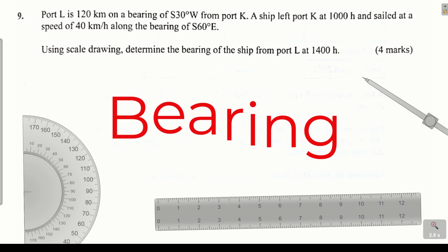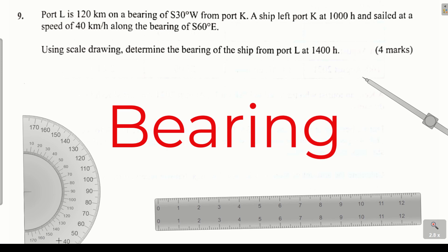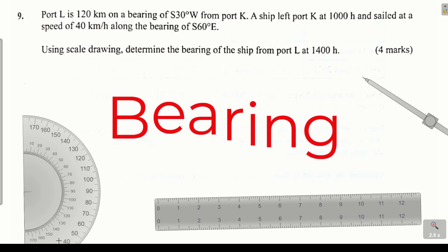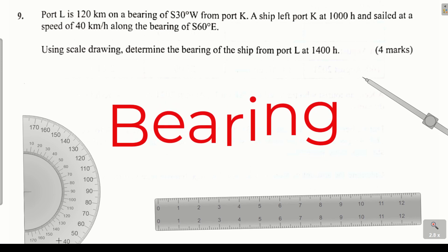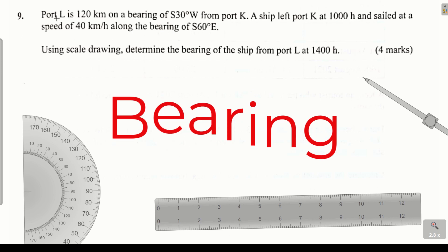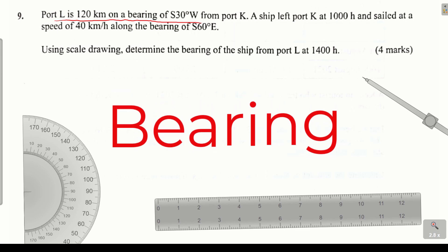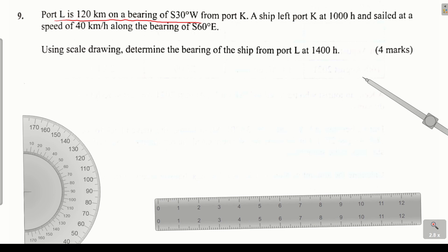Now to solve this question, we should begin by doing a sketch of these positions before we go to the accurate drawing. So for the first statement, port L is 120 kilometers on a bearing of south 30 degrees west from port K. So I will do a sketch here.